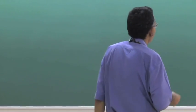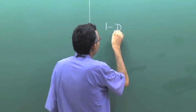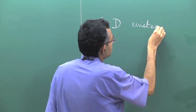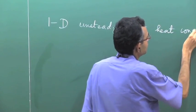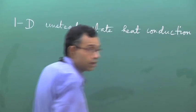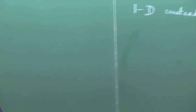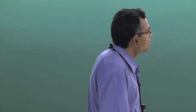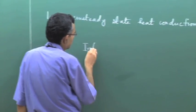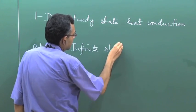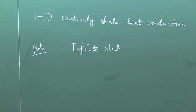We will discuss about first one-dimensional unsteady state heat conduction. It is a general broad topic and we will try to understand this particular issue with the help of some problems. We will first consider one problem of something called as an infinite slab.